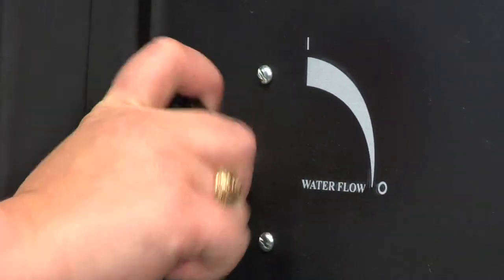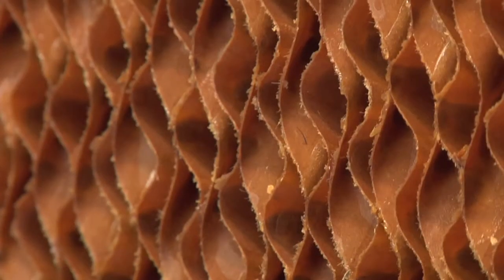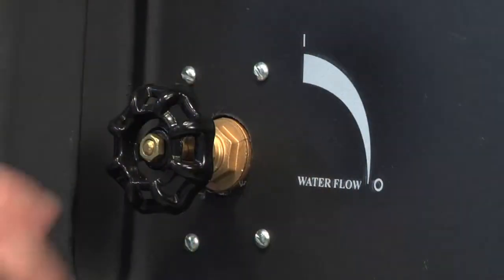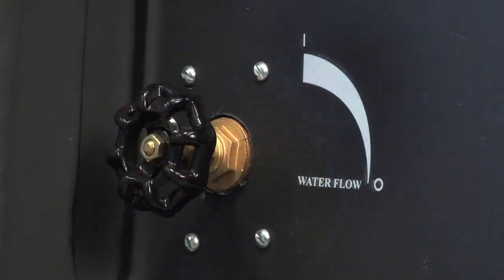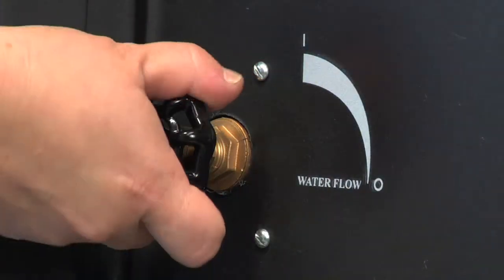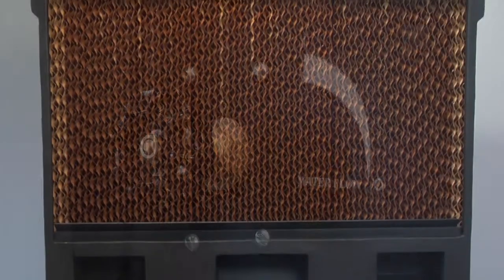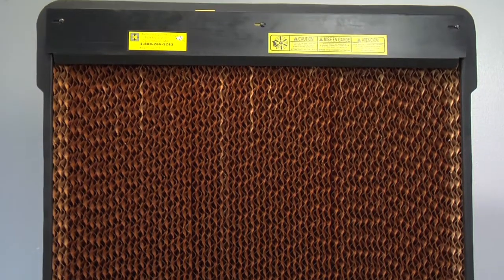Use the flow control valve to adjust the water flow. Turn the valve to the right to decrease the flow. Turn the valve to the left to increase the flow. Adjust the water flow based on the flow over the pads.